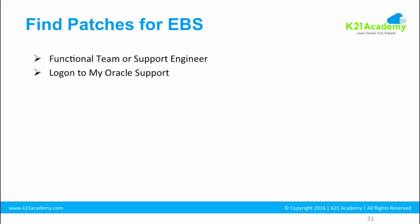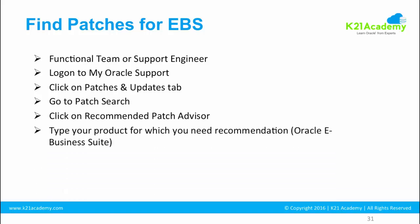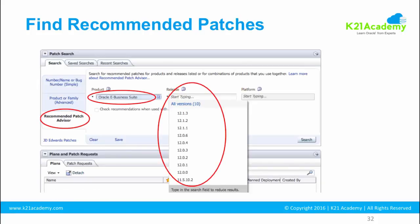Similarly, for application DBA related things like FND, technology stack, or application object library, you as an Apps DBA will identify what patches to apply based on problems you encounter, or you can contact support. Another option is to log into My Oracle Support, go to the Patches and Updates tab, and search for a patch or click on the Recommended Patch Advisor. You should have already created an account at support.oracle.com, attached a valid CSI, and once you log in, go to the patch tab and search.